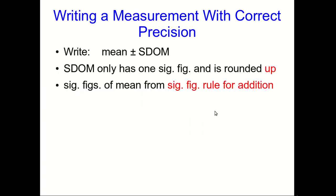So we're now ready to write down our final measurement of the door. We're going to write the mean plus or minus an uncertainty, which is just the standard deviation of the mean. And that SDOM has only one sig fig, despite all the work it took to calculate it.